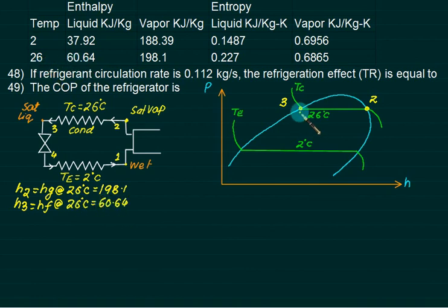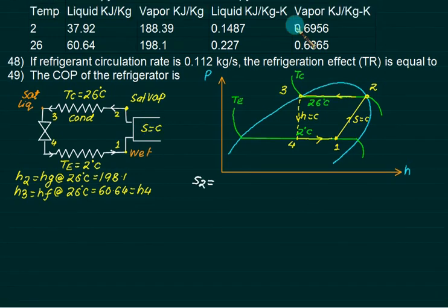Point 3 to point 4 is iso-enthalpic process, so this point is also known. Out of 4 points, we know the enthalpy of 3 points. The isentropic process in compressor will be like this. S2 equals Sg at 26 degrees Celsius, which is 0.6865.